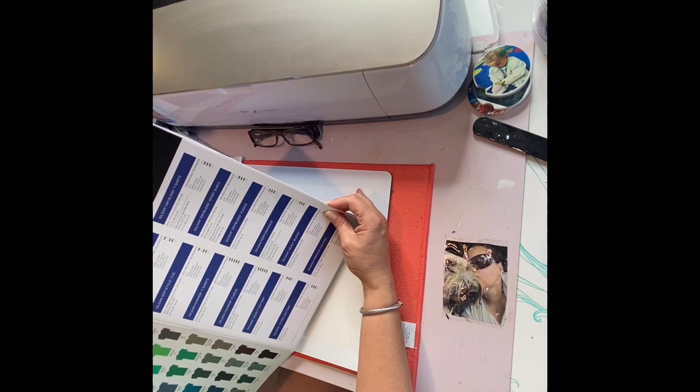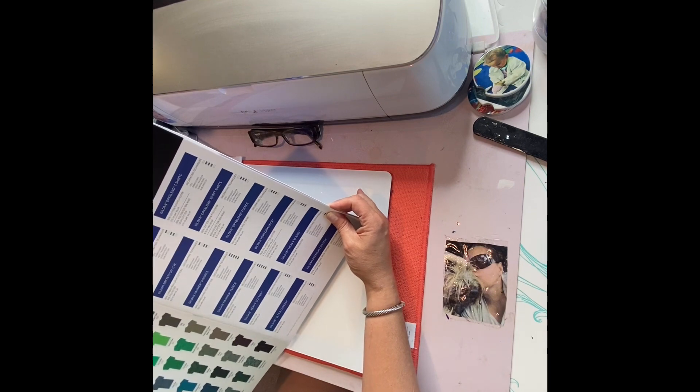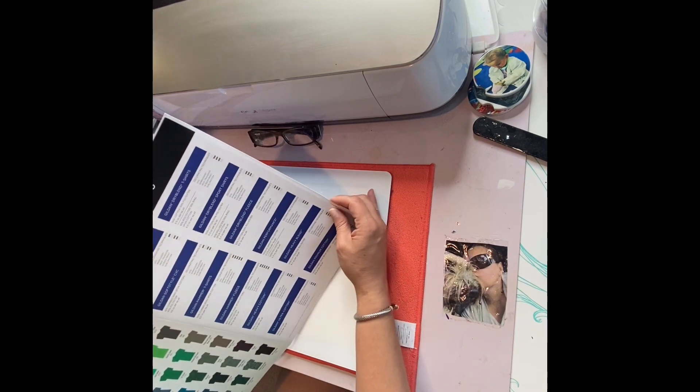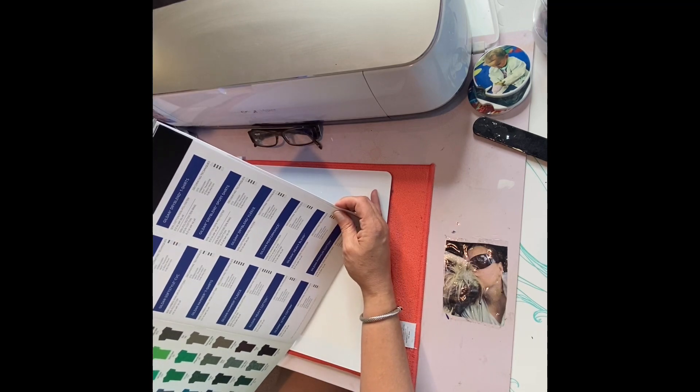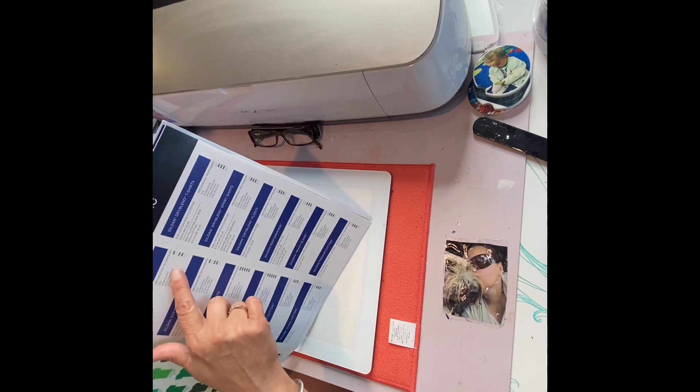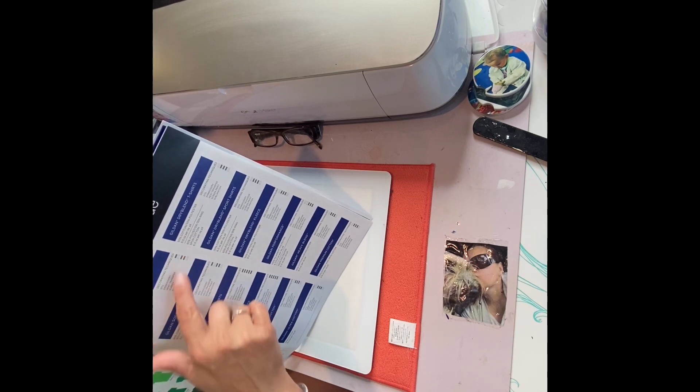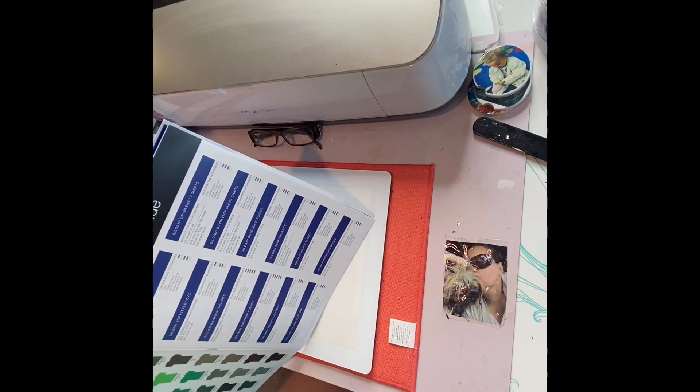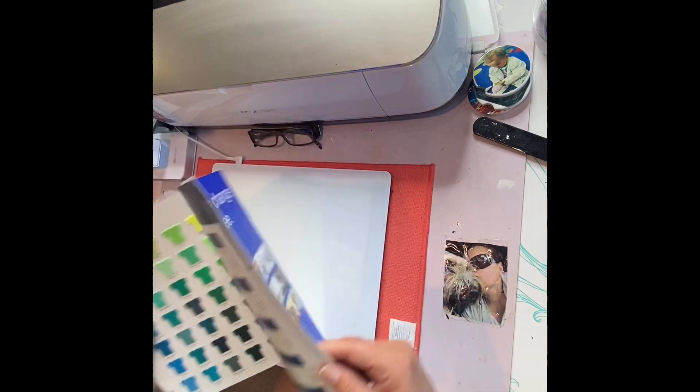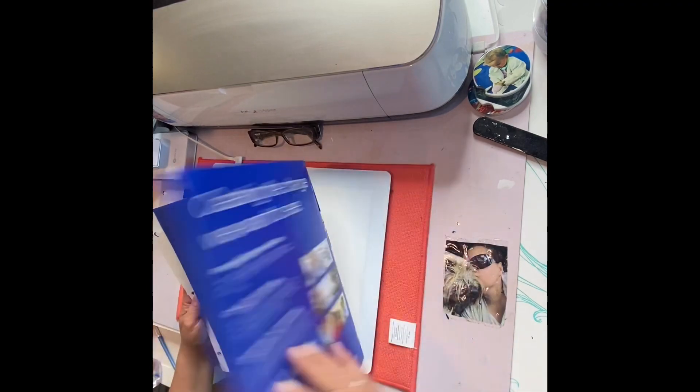It tells you whether or not you can heat, screen print, heat transfer, embroidery, all those different things. Like you would think, oh can't you embroider on everything? But like this is the soft style and it says no to embroidery, so it's probably too thin of a material. Would have never thought about that.